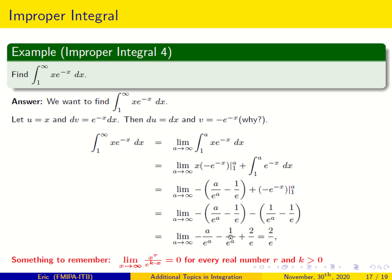Simplifying the signs — minus minus gives plus — we get 2 over e minus a over e to the a minus 1 over e to the a. You can memorize that x to the r divided by e to the k times x, with k positive and r any real number, goes to 0 as x goes to infinity. Here r equals 1 and k equals 1, so a over e to the a goes to 0. Similarly, 1 over e to the a goes to 0. So the limit leaves us with 2 over e.